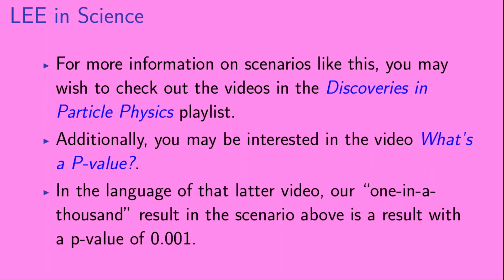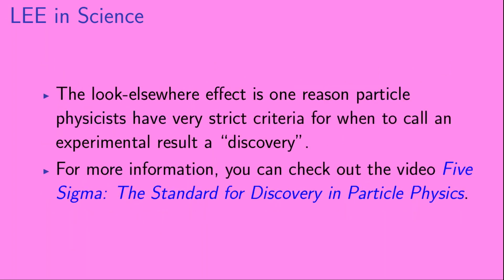For more information on scenarios like this, you may wish to check out the videos in the 'Discoveries in Particle Physics' playlist. You may also be interested in the video 'What's a p-value?' The look elsewhere effect is one reason particle physicists have very strict criteria for when to call an experimental result a discovery. For more information, you can check out the video 'Five Sigma: The Standard for Discovery in Particle Physics.'